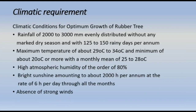Climatic requirements for optimum growth of rubber: Rainfall of 2,000 to 3,000 mm evenly distributed without any marked dry season, with 125 to 150 rainy days per annum. Maximum temperature of about 29°C to 34°C and minimum of about 20°C or more, with a monthly mean of 25 to 28°C. High atmospheric humidity of about 80%, bright sunshine amounting to about 2,000 hours per annum at the rate of 6 hours per day, and absence of strong winds.